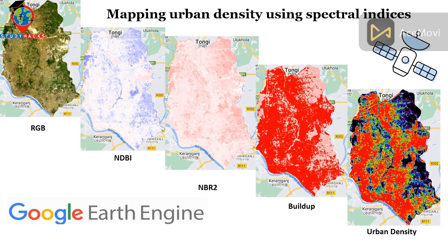Hello everyone, welcome to the Study Hacks Institute of GIS and Remote Sensing. Today I will show you a very important topic: how we can easily make the urban density map using the Google Earth Engine platform. We are using different types of spectral indices to find out the built-up region and then calculate the density of urban areas. I will show you all of those things step by step, and I hope after completing this tutorial you are able to make an urban density map using spectral indices.